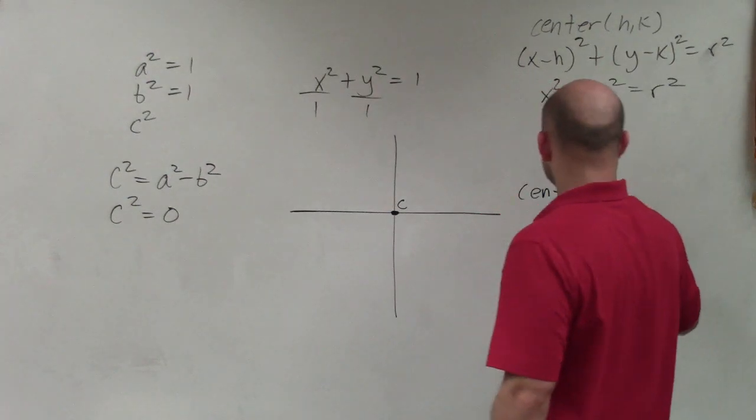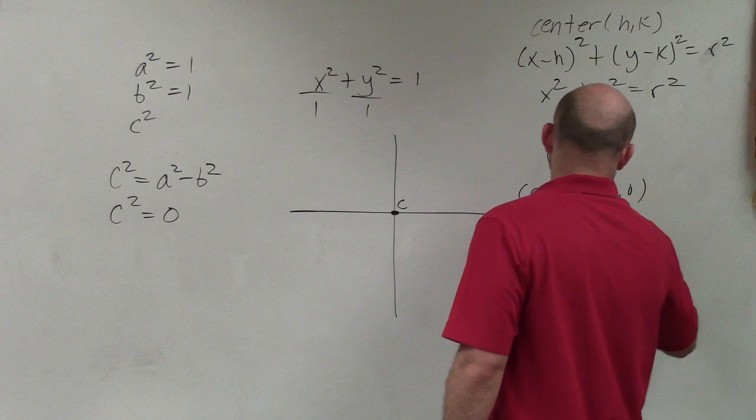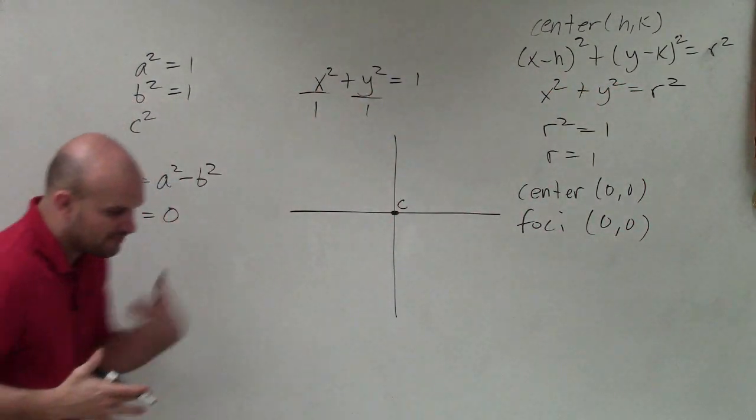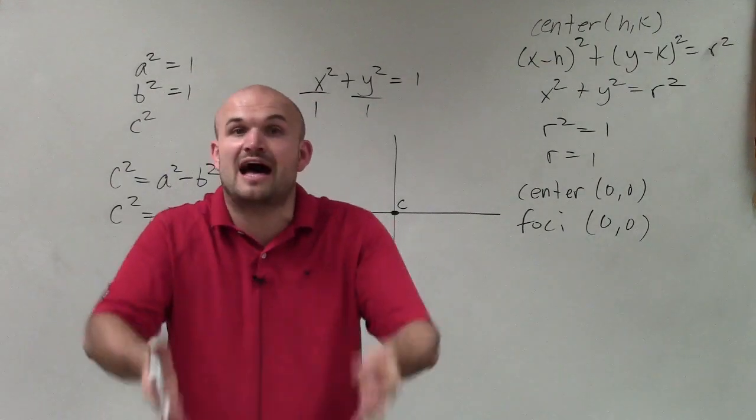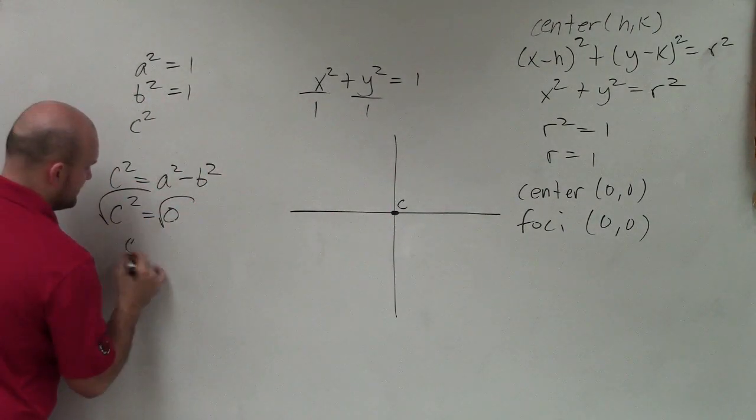And what's nice about that is our foci are also both at 0, 0. Because remember, the value of c is 0, and the distance from the center to the foci is the value of c, which in this case is 0. Square root both sides if you like.